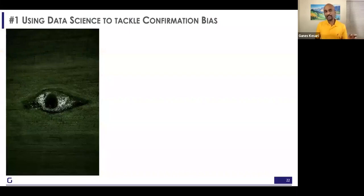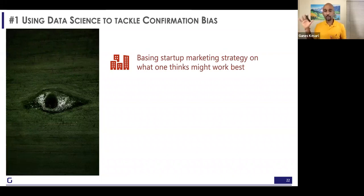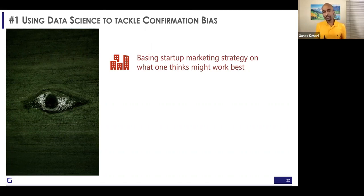How can you use data science — the three principles we've seen — to tackle confirmation bias? The example we saw earlier: we looked at how a founder who has probably decided they're going to place some Facebook ads, use that as part of their marketing strategy. So how do you fight that kind of confirmation bias?